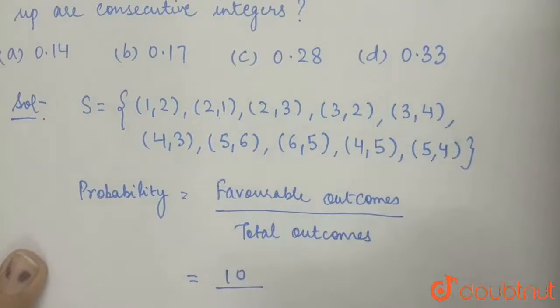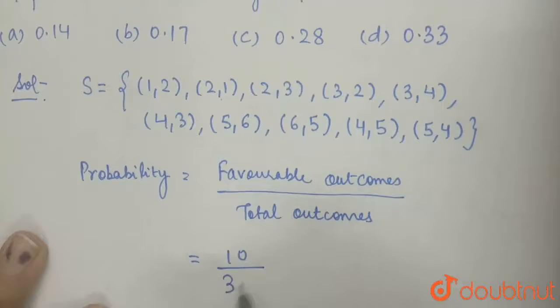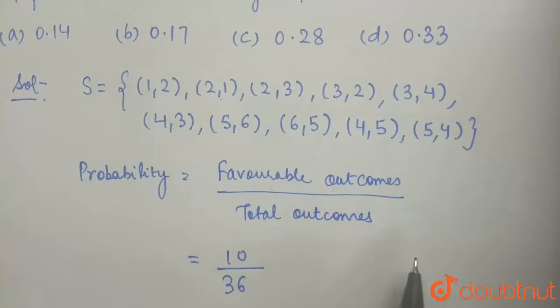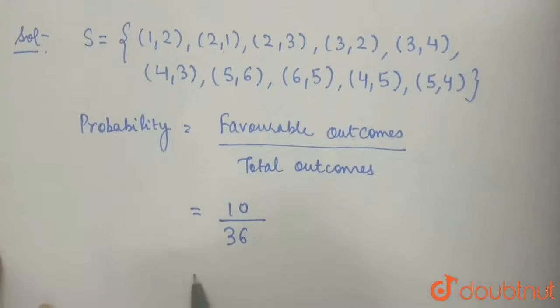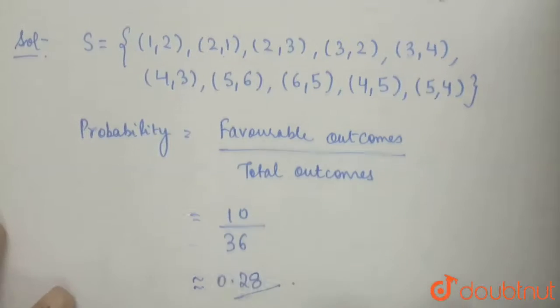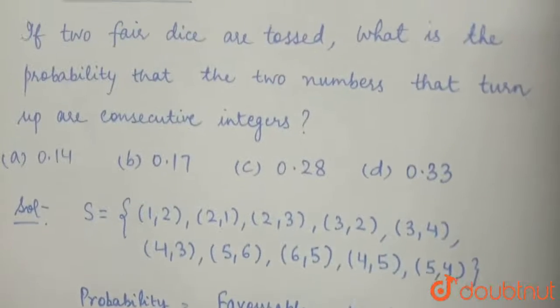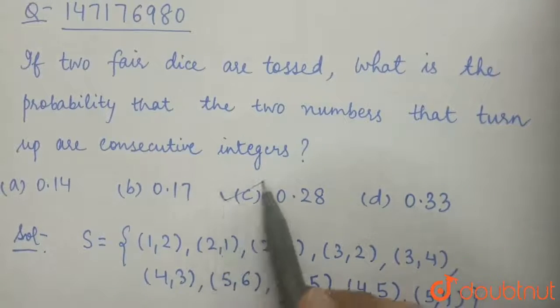So 10 upon total outcomes will be 36. That is, if two dice are rolled and each dice have six numbers, so we have total outcomes as 36. Now this is approximately calculated as 0.28. So this is our answer, and according to our options given to us, option C is correct.